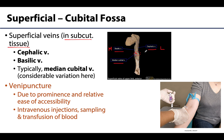The median cubital vein and most superficial veins lie directly on the deep fascia and the bicipital aponeurosis, which helps prevent a needle from going deeper and reaching a deeper artery. Note that there is considerable variation in the veins other than the basilic and cephalic, and really any superficial vein can be used.